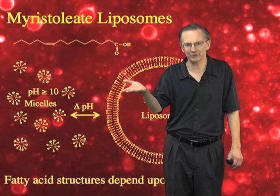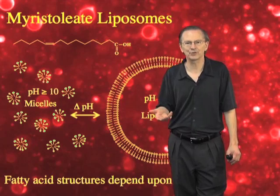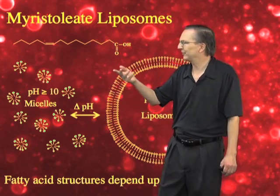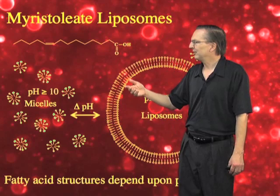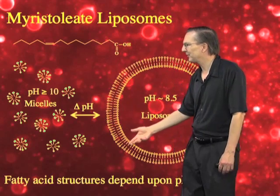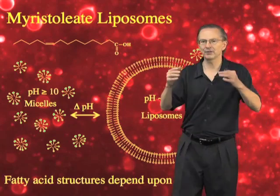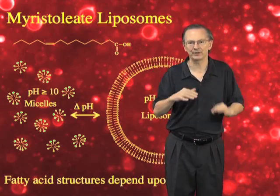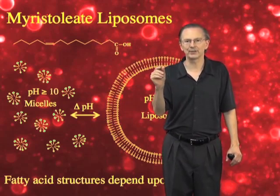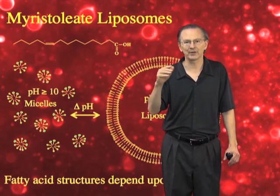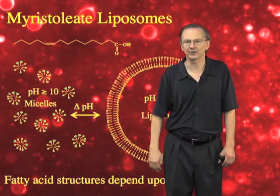As the pH in the environment gradually drops towards roughly 8.5, which is the point at which half of these carboxylates will be ionized and half protonated, there is a phase transition that results in the spontaneous assembly of bilayer membranes, as you can see here. Because the curvature is much reduced in these much larger aggregates, these are actually stabilized by hydrogen-bonding interactions between adjacent charged and ionized carboxylates.